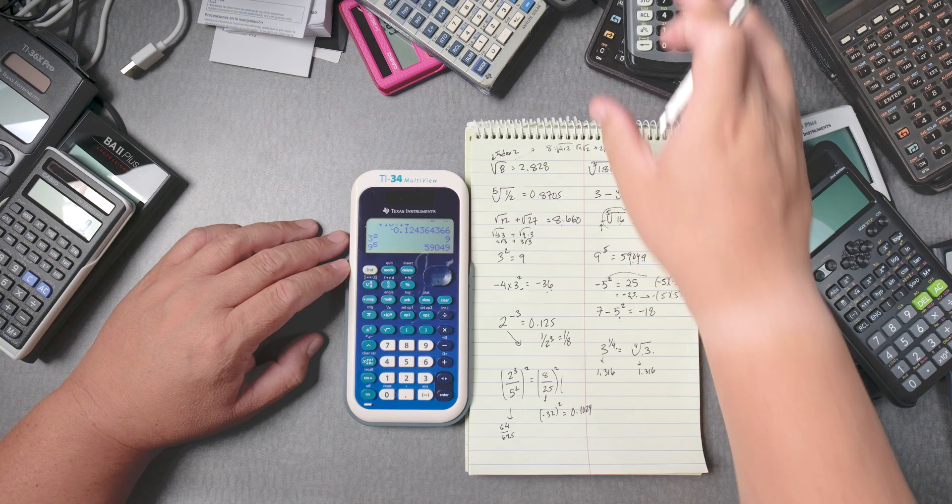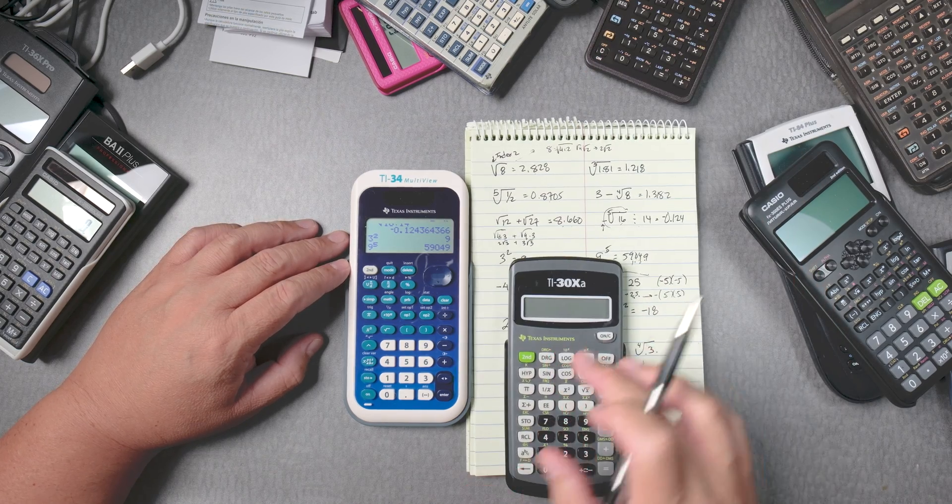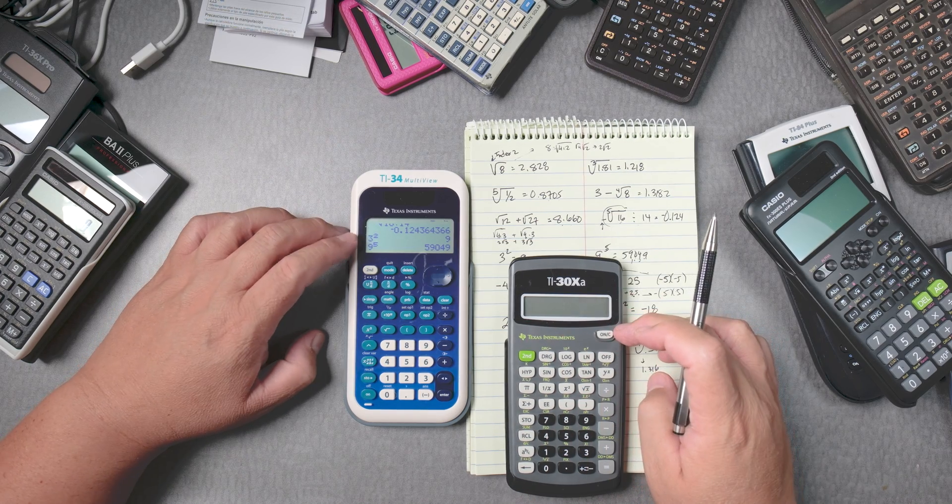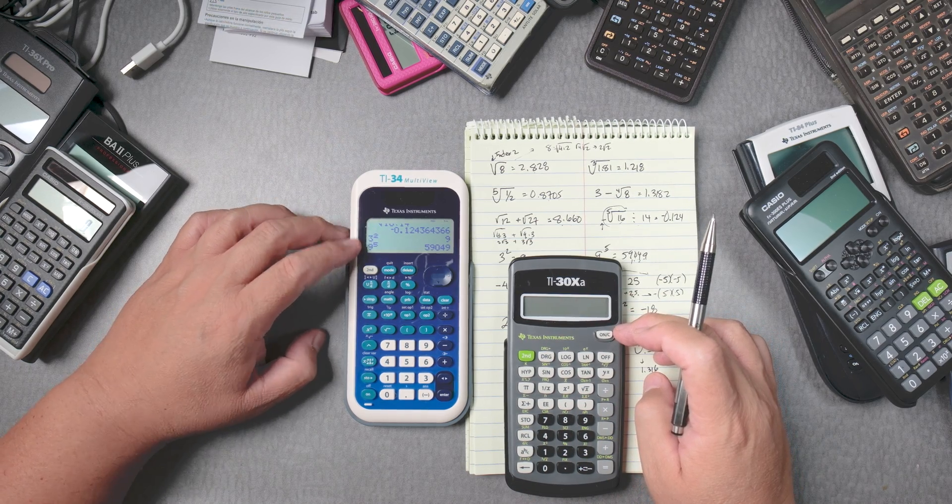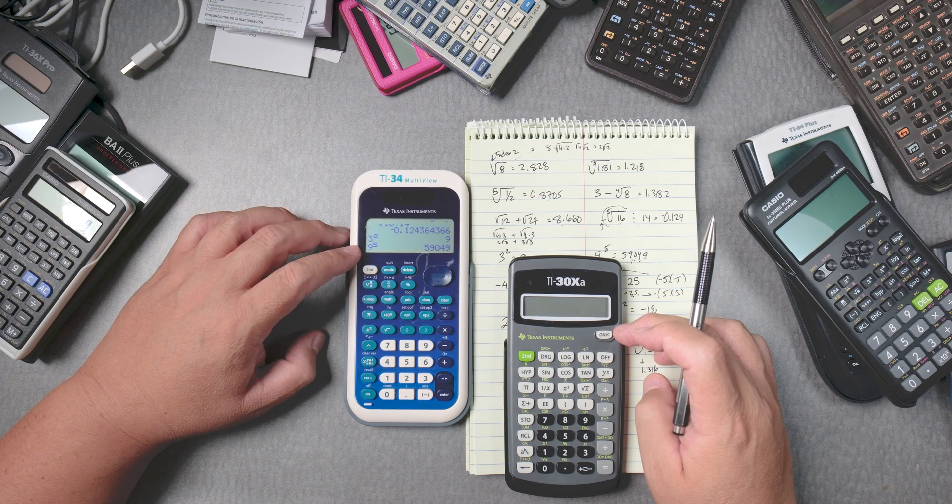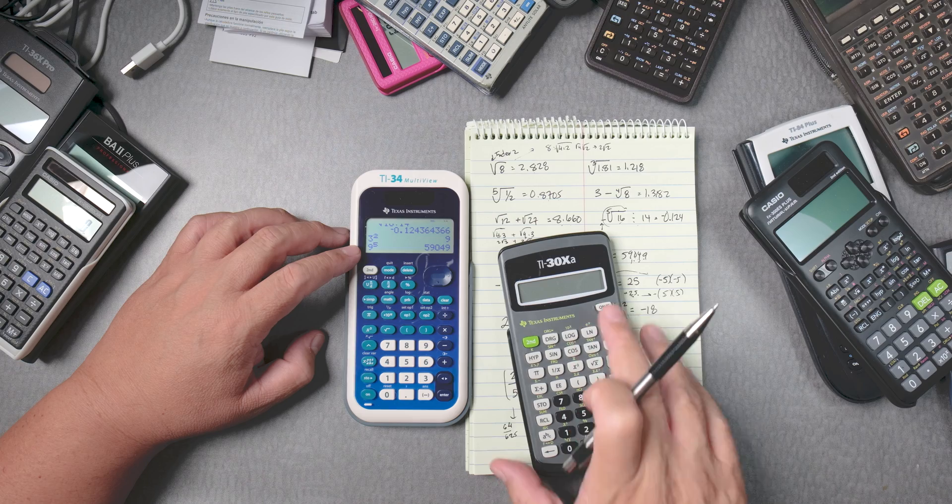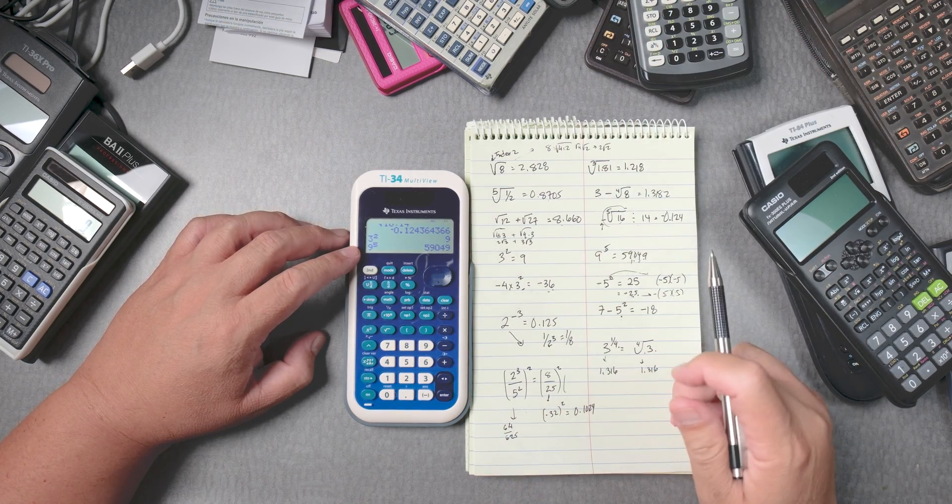If you're interested, other calculators like these do not have the algebraic look that this one has. Look, this one has how many, like three lines that you can see, while the TI-30X, which is the lower version, doesn't.